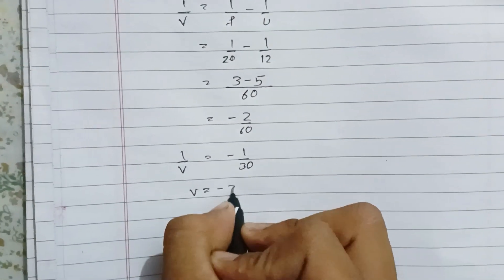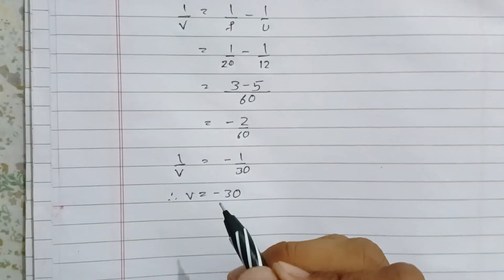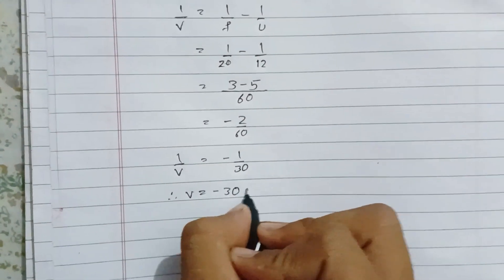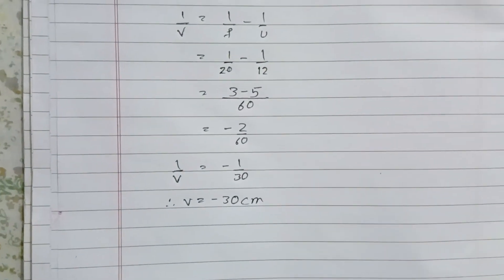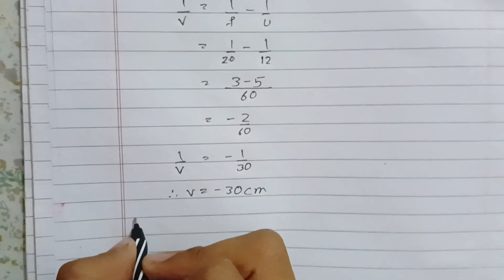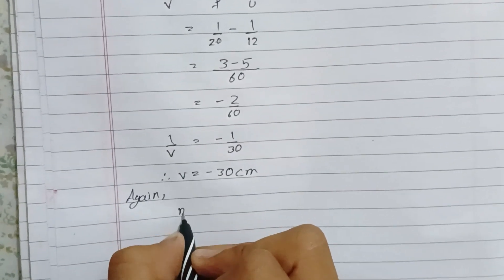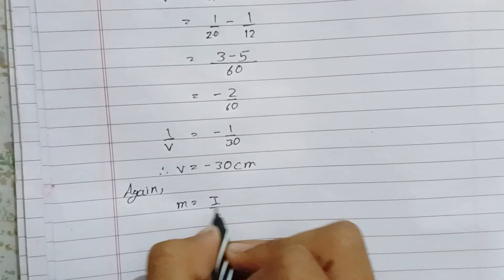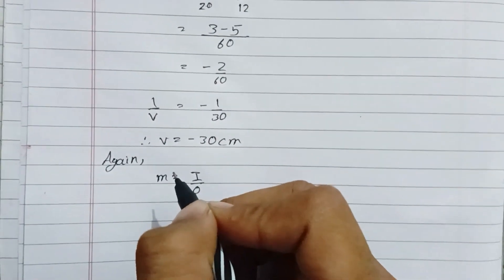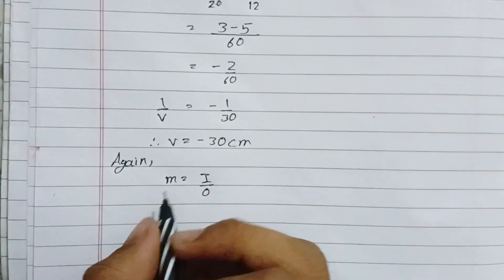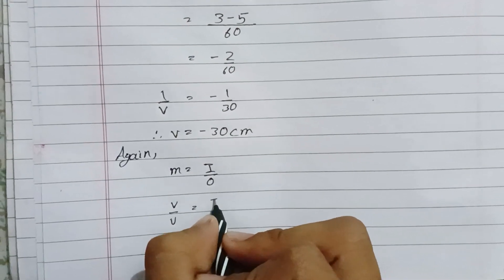This simplifies to 1 by v equals minus 1 by 30. Therefore, v equals minus 30 cm. Now for the image size, using magnification formula: m equals I by O, where I is the height of image.